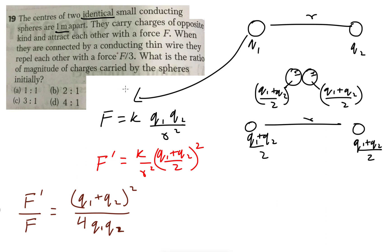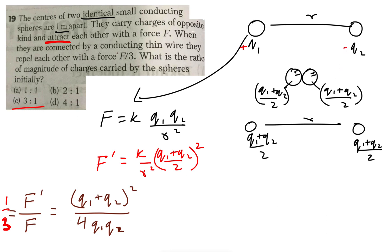The question asks for the charge ratio q1/q2. If you do the full algebra it takes longer. What I suggest is: plug in the values. F'/F is given as 1/3, so I'll write 1/3 here. What is unique in this question is that the force F was attractive — the spheres were attracting each other — meaning if q1 is positive, the other is negative, so there's a minus sign involved.